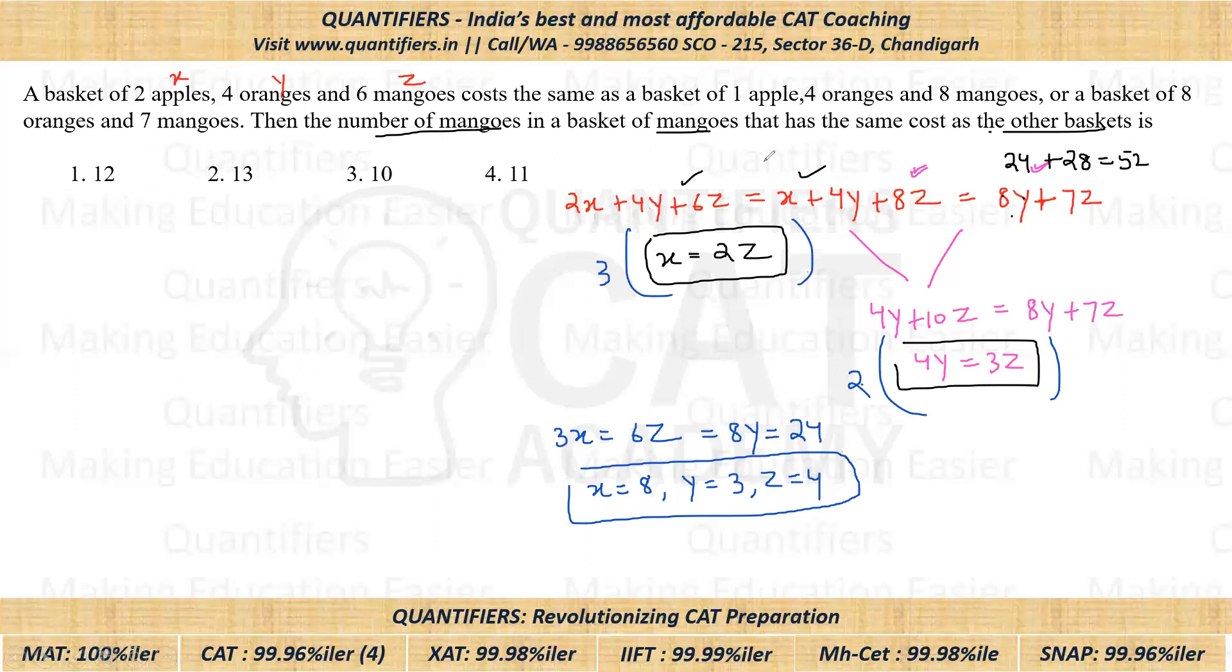They're asking how many mangoes will be there in a basket of mangoes. One mango's cost is four rupees. Basket's cost is fifty-two. So how many mangoes will be there? Fifty-two by four equals thirteen mangoes will be there in one basket. I hope this question is clear to all of you. Thank you everyone.